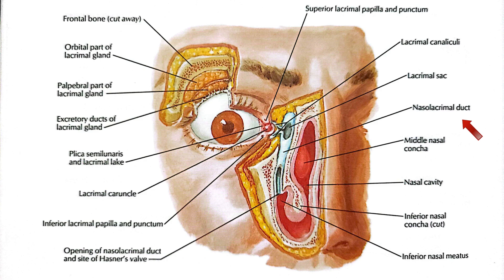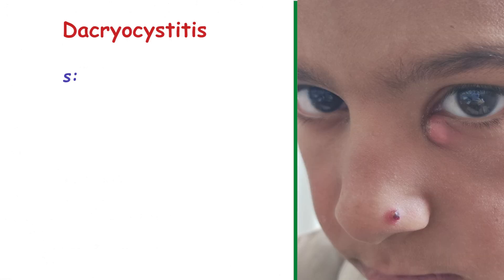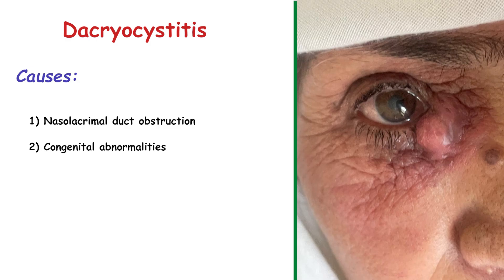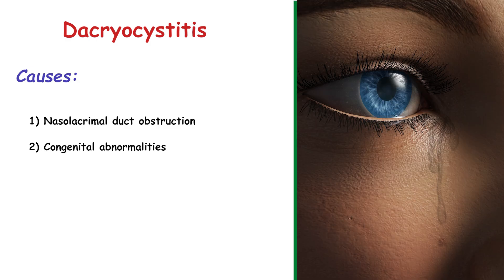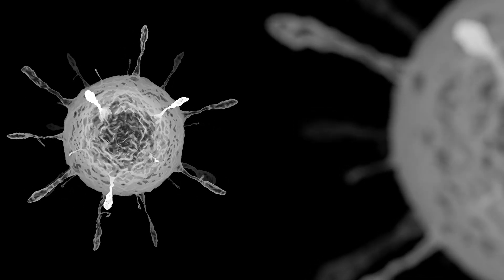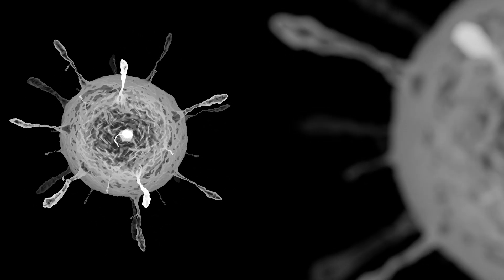There are several causes of dacryocystitis. The first and most common cause is nasolacrimal duct obstruction, which leads to stagnant tears and bacterial growth. The second common cause is congenital abnormalities — babies may have underdeveloped tear ducts, which can cause congenital dacryocystitis. Another cause is nasal or sinus infections, as infections from nearby structures can spread to the lacrimal sac.